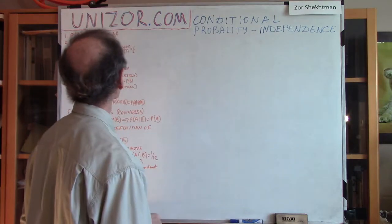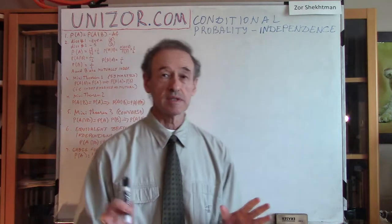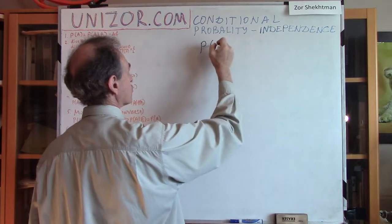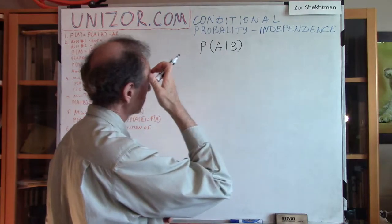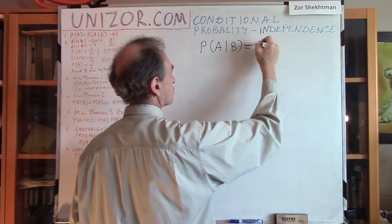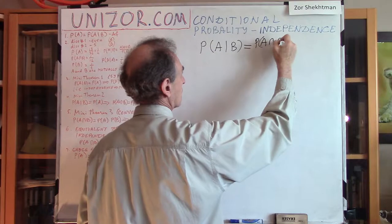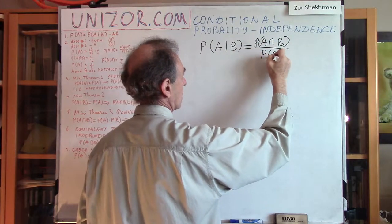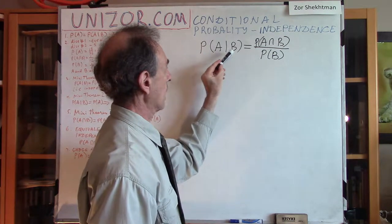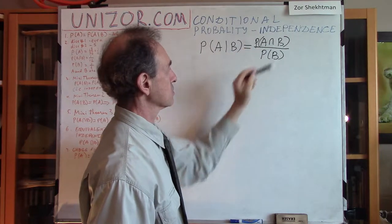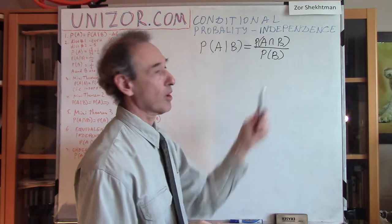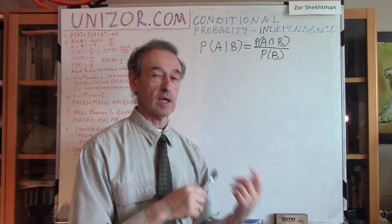In my particular case, I would start with the definition of the conditional probability, which we know from the previous lectures. The conditional probability of event A under the condition that event B occurs is equal to the probability of their intersection — the intersection of the event we are interested in and the event which is the condition — divided by the probability of event B, which is the condition.